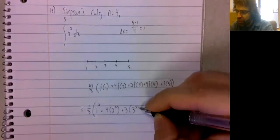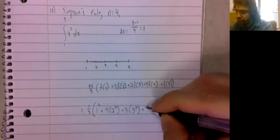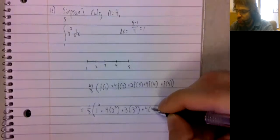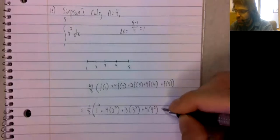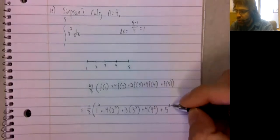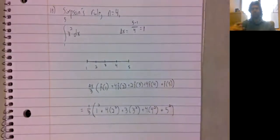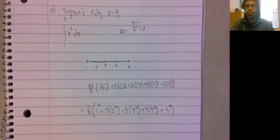Times three squared, plus four, times four squared, plus five squared. And let me just type that into a calculator.